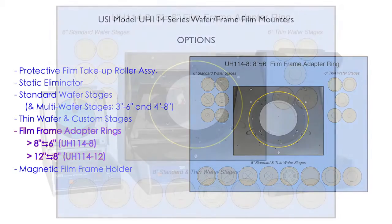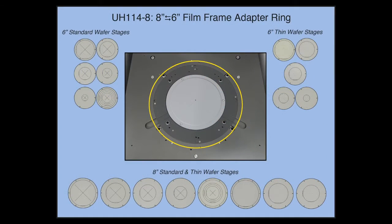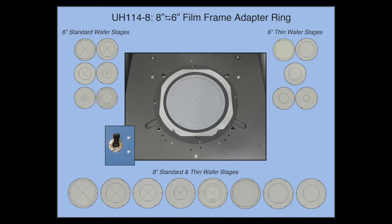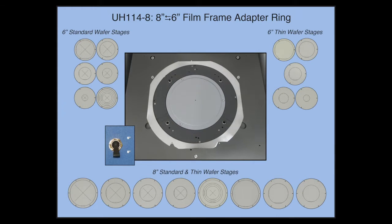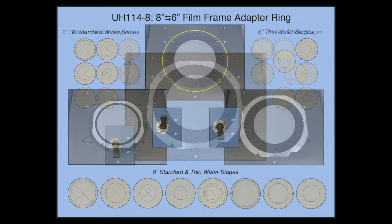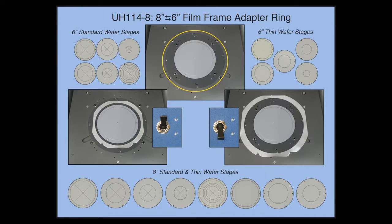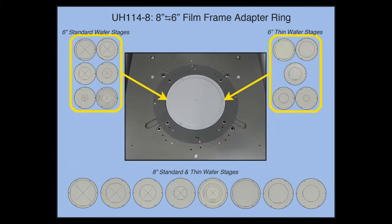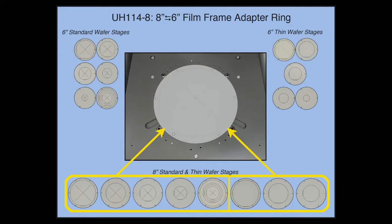Film frame adapter rings. The film frame adapter ring allows the flexibility to use two different sized film frames on a single 8-inch or 12-inch machine. This is used not only for varying subsequent expansion after wafer mounting, but also allows the flexibility to interchange the entire range of any of the entire set from two different sized wafer stage diameters on a single machine.